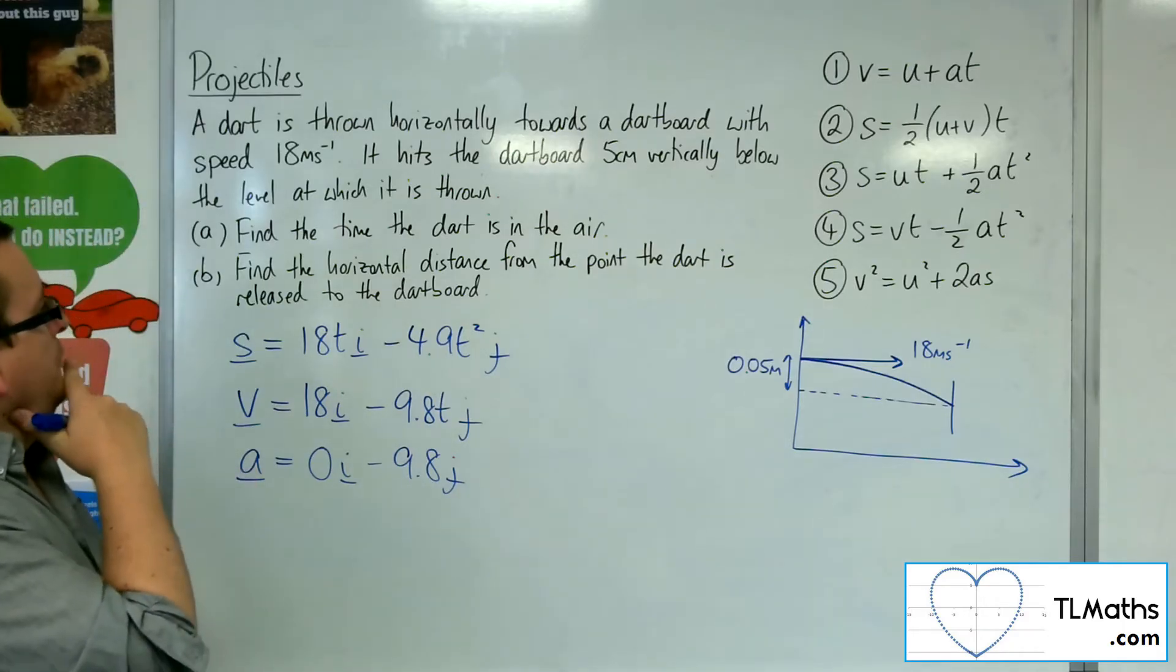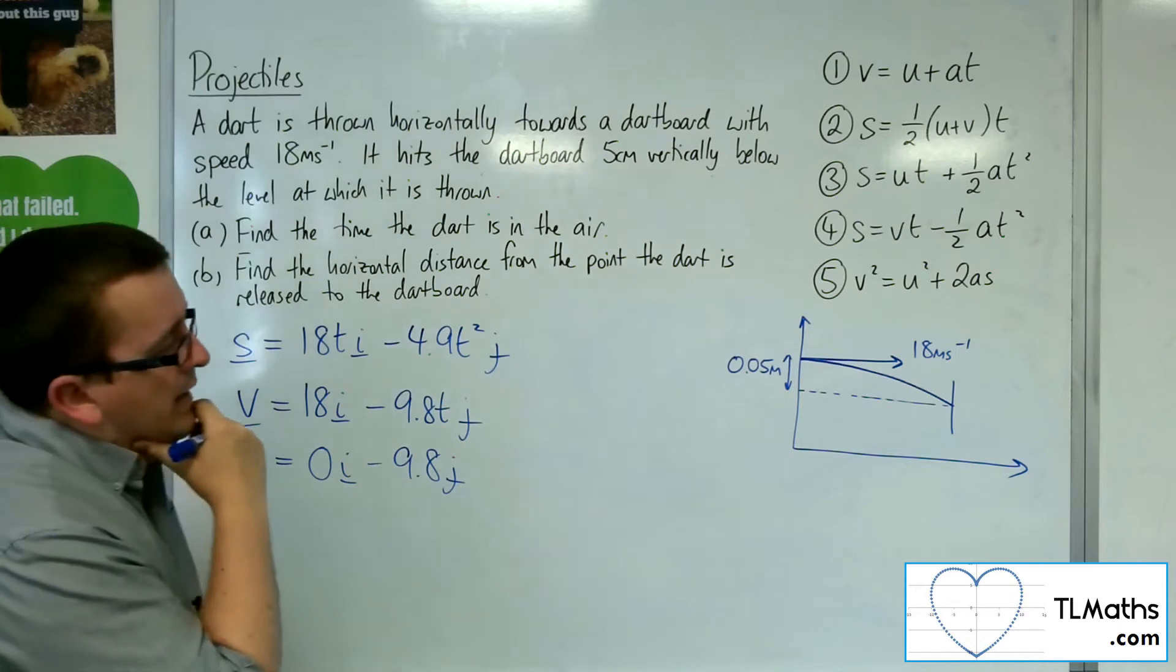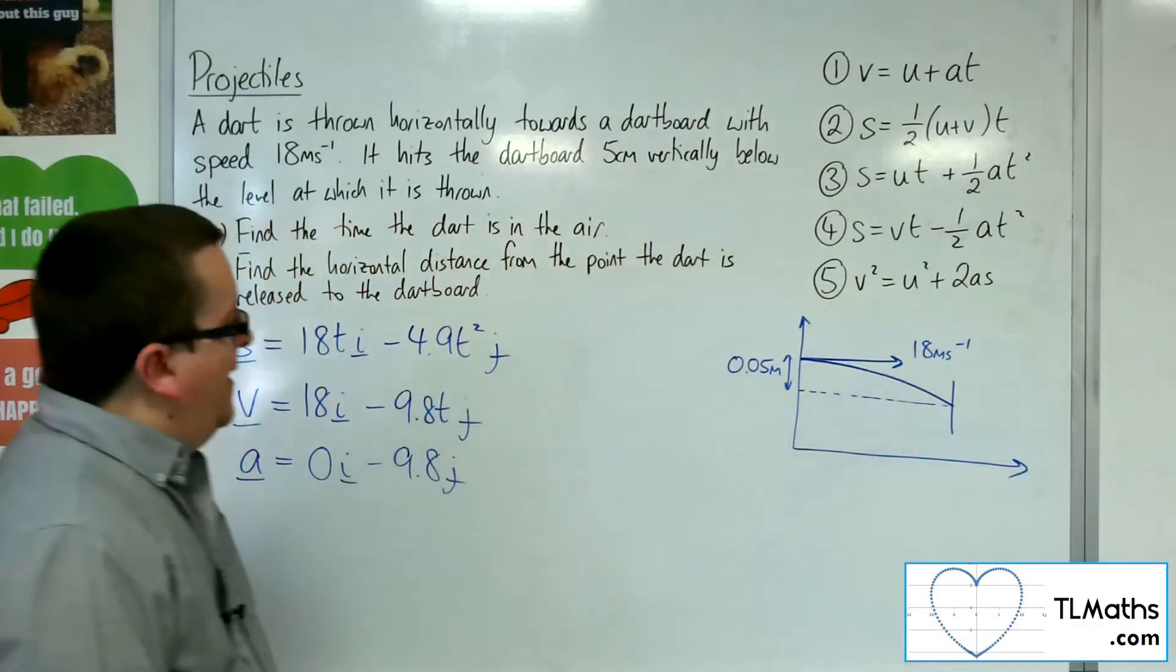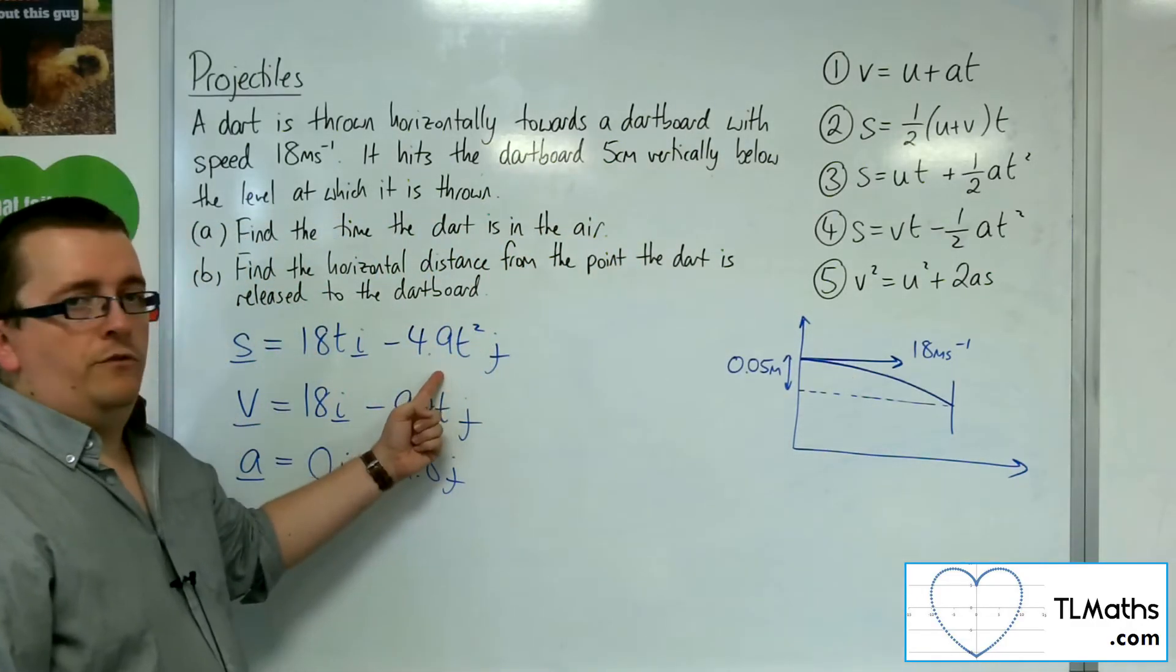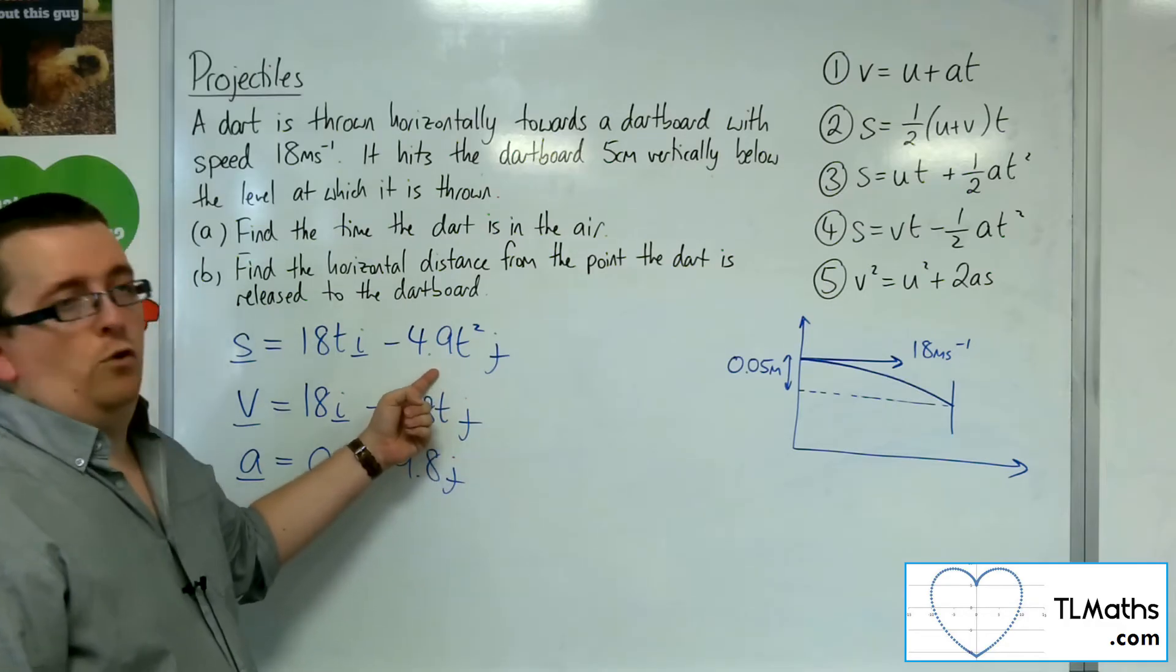Right, so find the time the dart is in the air. So what I want is for it to drop 0.05 metres. So I want the vertical component of the displacement to be minus 0.05.